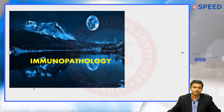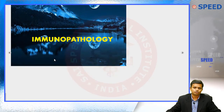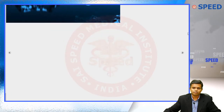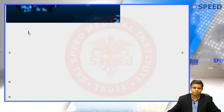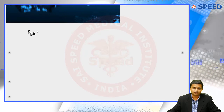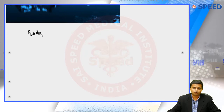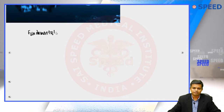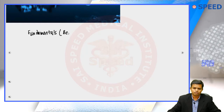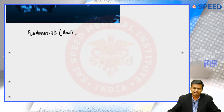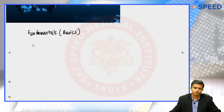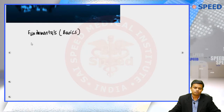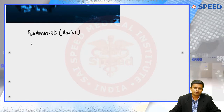We will now go through how I am going to divide this topic. We are going to start with fundamentals — the basics of immunity. Your Robbins textbook has done the same. We will start with the basics and then go on to the first important topic in immunity.